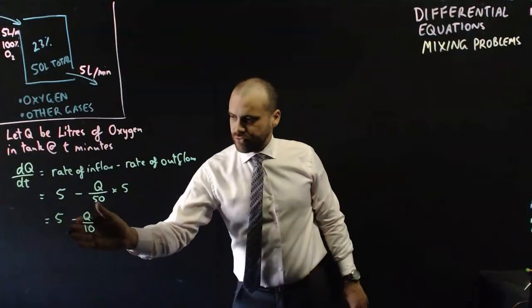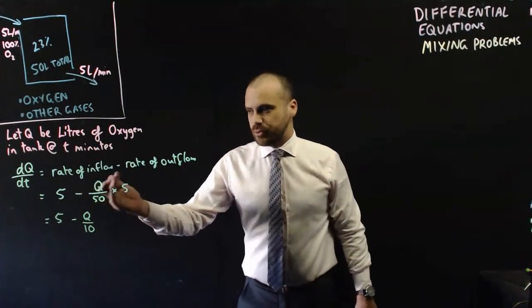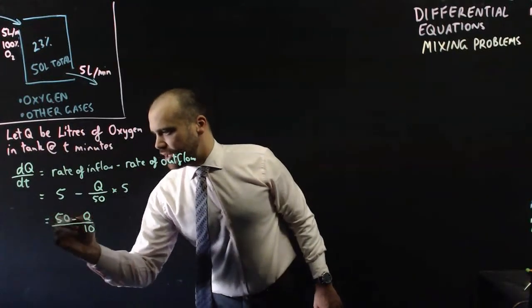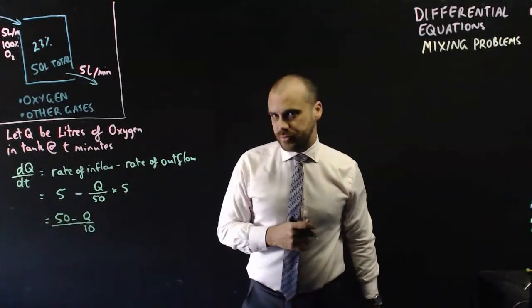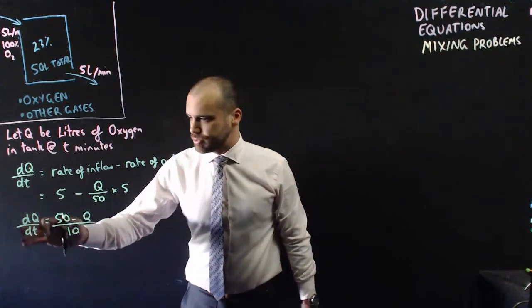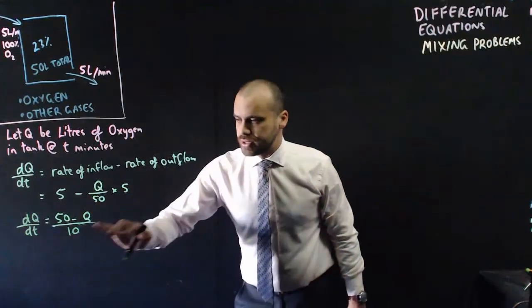Now, that simplifies as 5 minus Q over 10, but we can also put the whole thing over 10, and we get 50 minus Q over 10. Now, this is our differential equation. The rate of change of the oxygen in litres with respect to time is equal to 50 minus Q over 10.